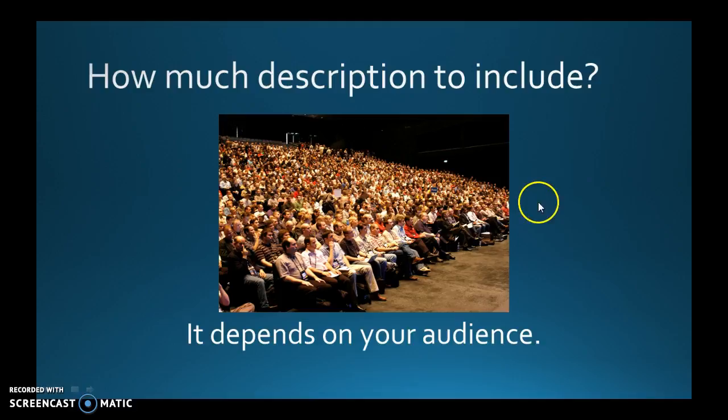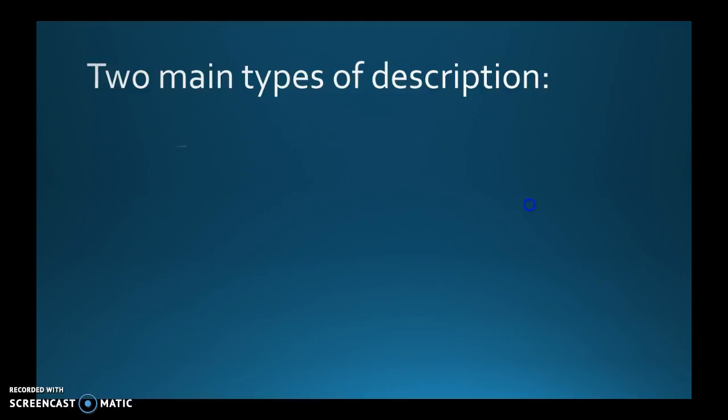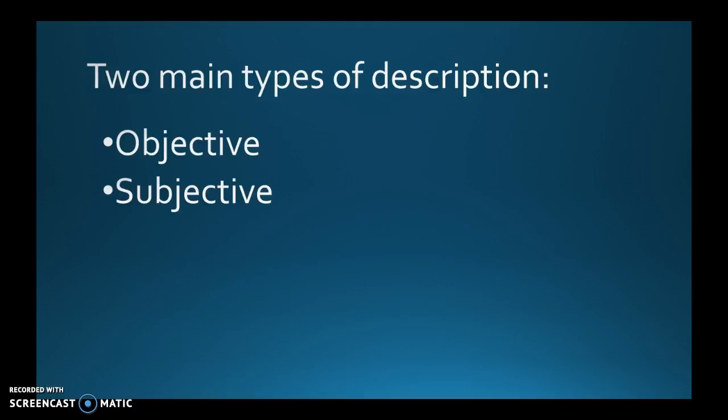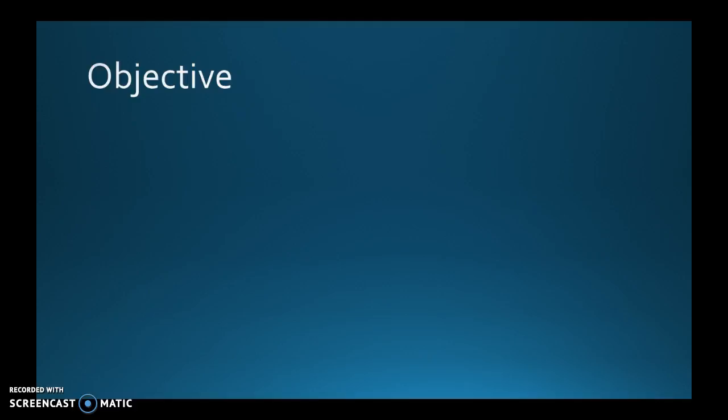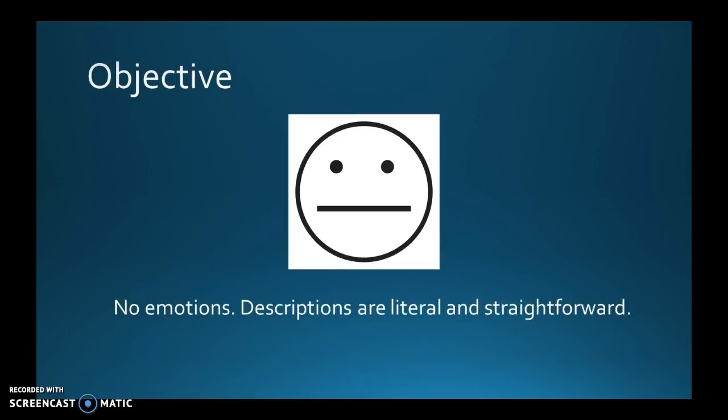Now there are two main types of description: objective and subjective. Objective basically means no emotions. Descriptions are literal and straightforward — it is what it is. It doesn't depend on your feelings or your own personal opinion.